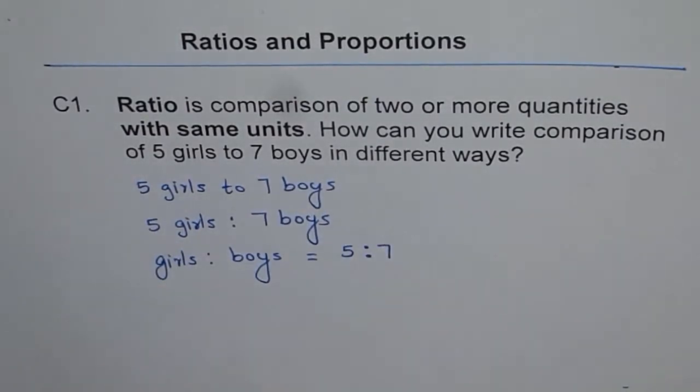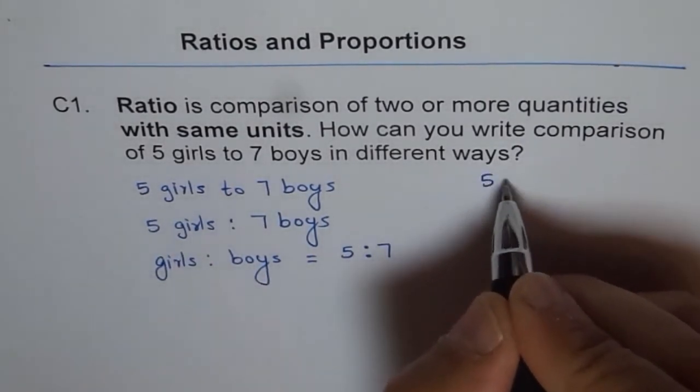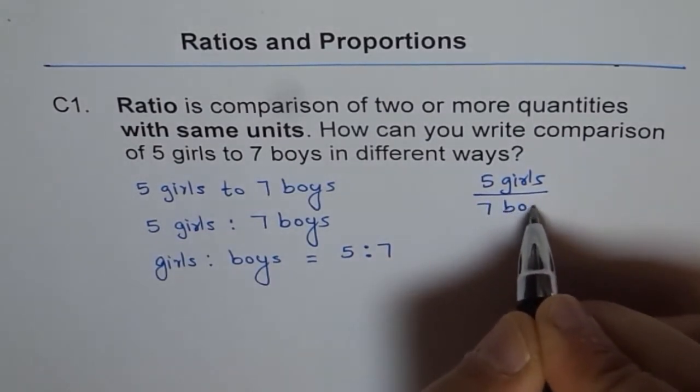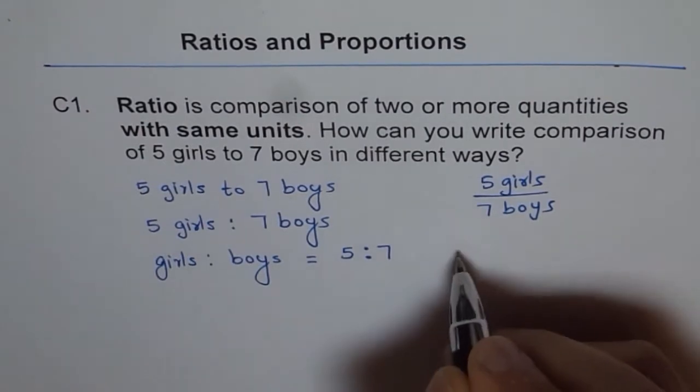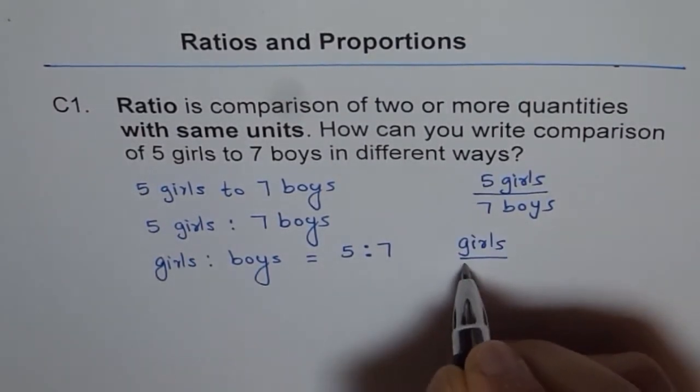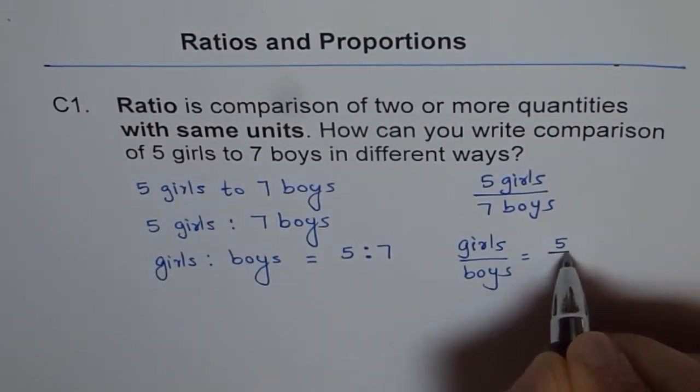This comparison could also be written like this: five girls to seven boys in the form of fractions. Or here we can write like this: ratio of girls to boys is five over seven.